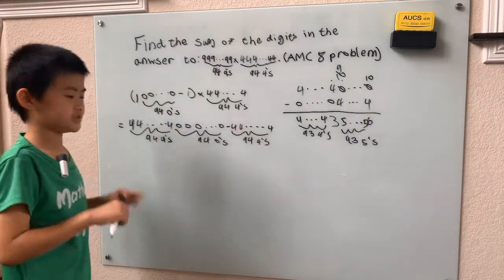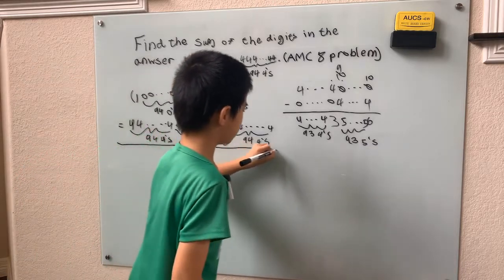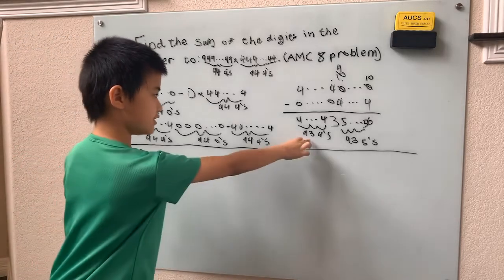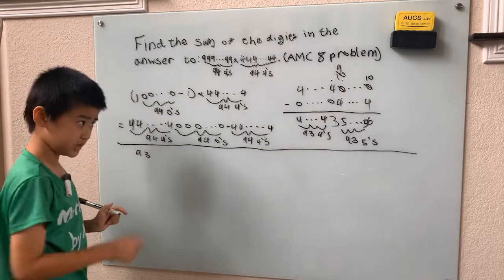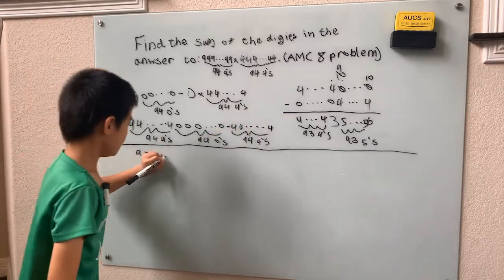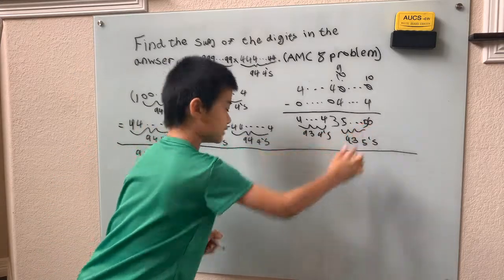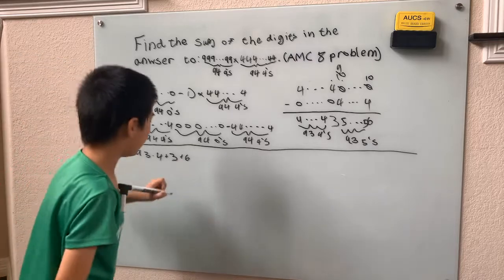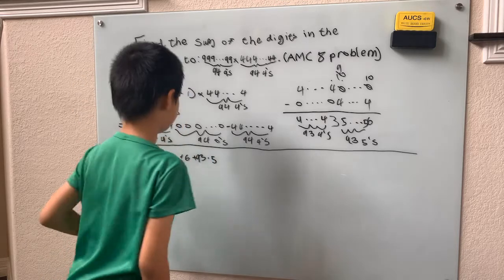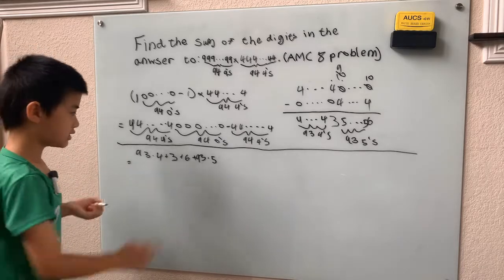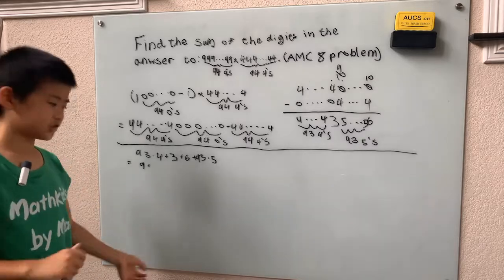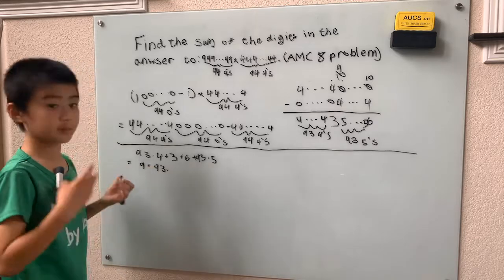Now we just add up all the digits. We have 93 fours, a 3, a 6, and 93 fives. We can group 3 and 6 together to make 9. Then we factor: 93 times 4 plus 93 times 5 equals 93 times (4 plus 5) equals 93 times 9.